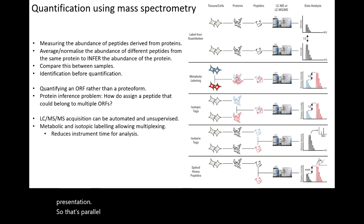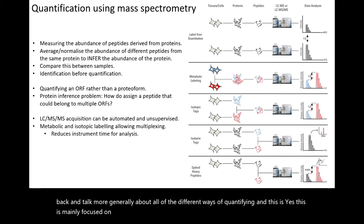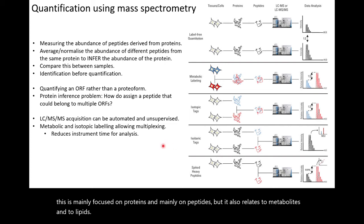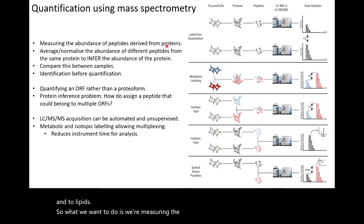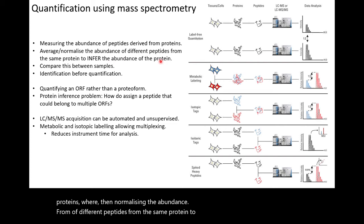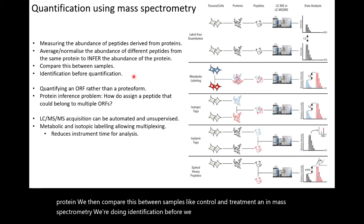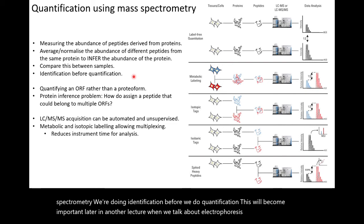That's parallel reaction monitoring and targeted methods. I want to step back and talk more generally about all the different ways of quantifying — this is mainly focused on proteins and peptides but also relates to metabolites and lipids. We measure the abundance of peptides that come from proteins, normalize the abundance of different peptides from the same protein to infer changes in protein abundance, and then compare this between samples like control and treatment. In mass spectrometry we do identification before quantification — this will become important later when we talk about 2D electrophoresis, where it's the reverse.